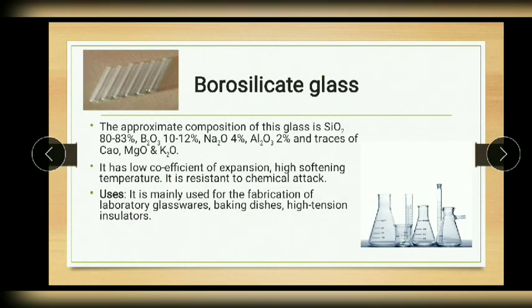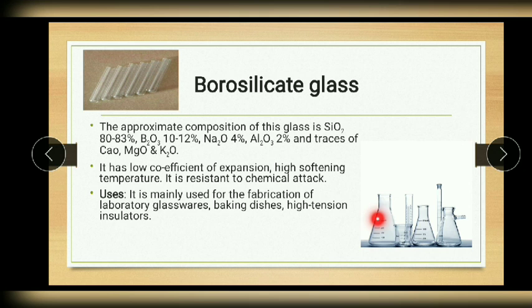The next one is the most familiar and you use them regularly in your labs. Yes, it is borosilicate glass. The major constituents are silica up to 80% and boron trioxide 10 to 12%, and the rest are minor constituents. Since it has a low coefficient of expansion and high softening temperature, and it is resistant to chemical attack, it is used in laboratory glasswares, baking dishes, high tension insulators, and washers.